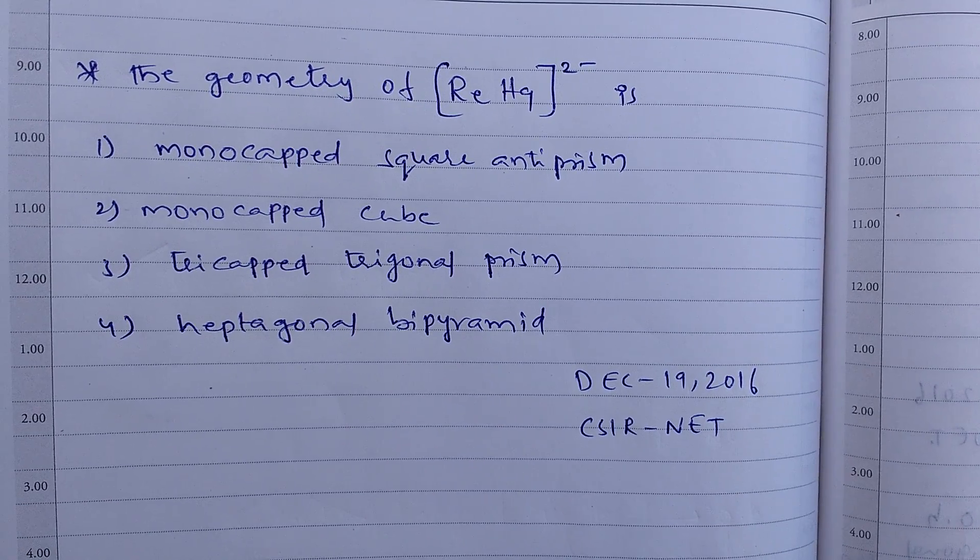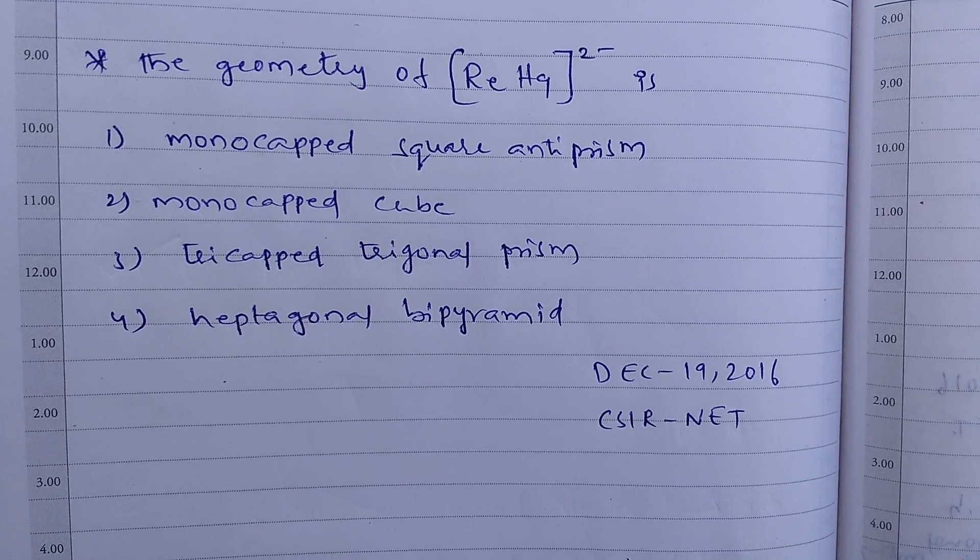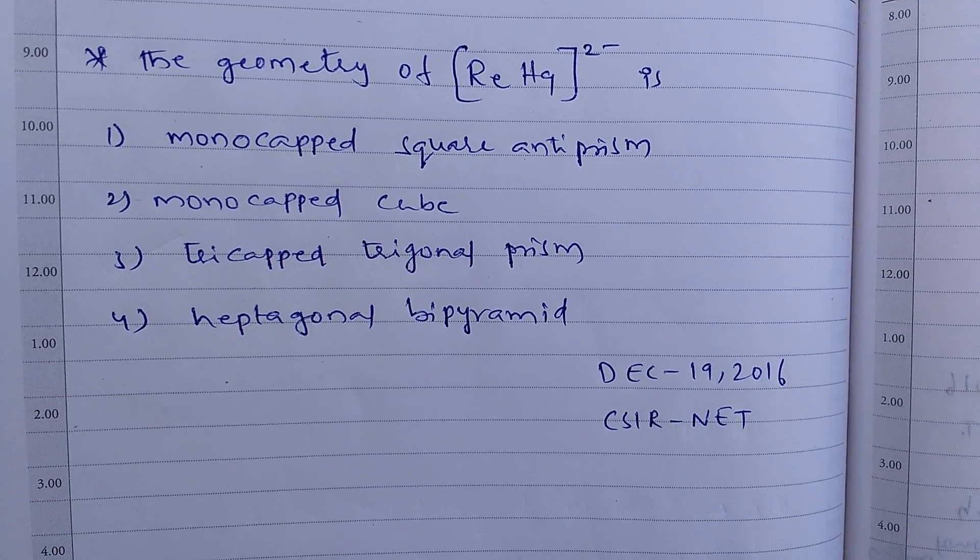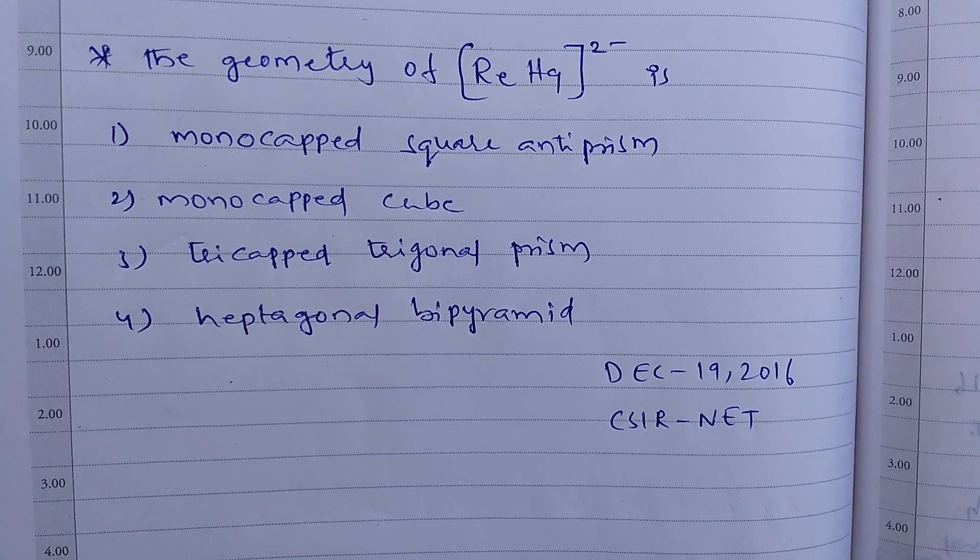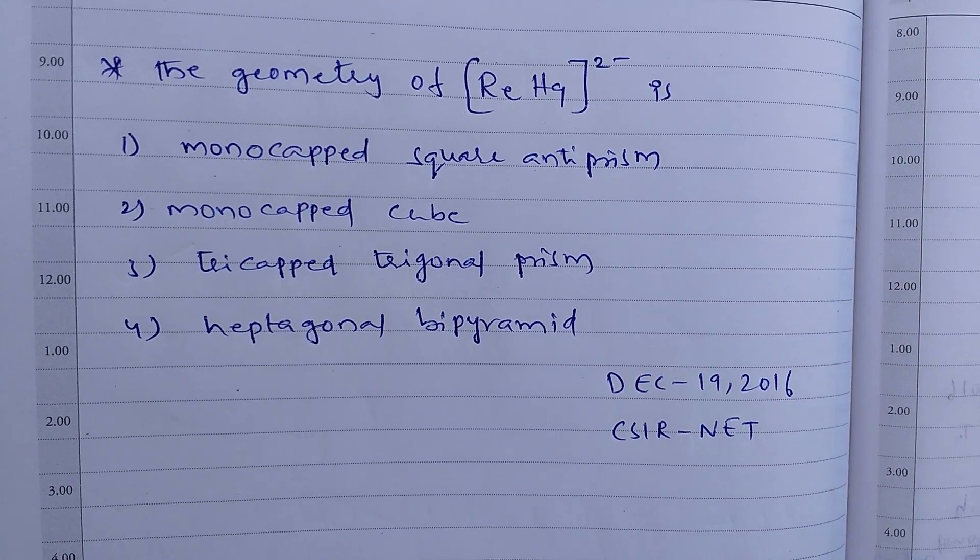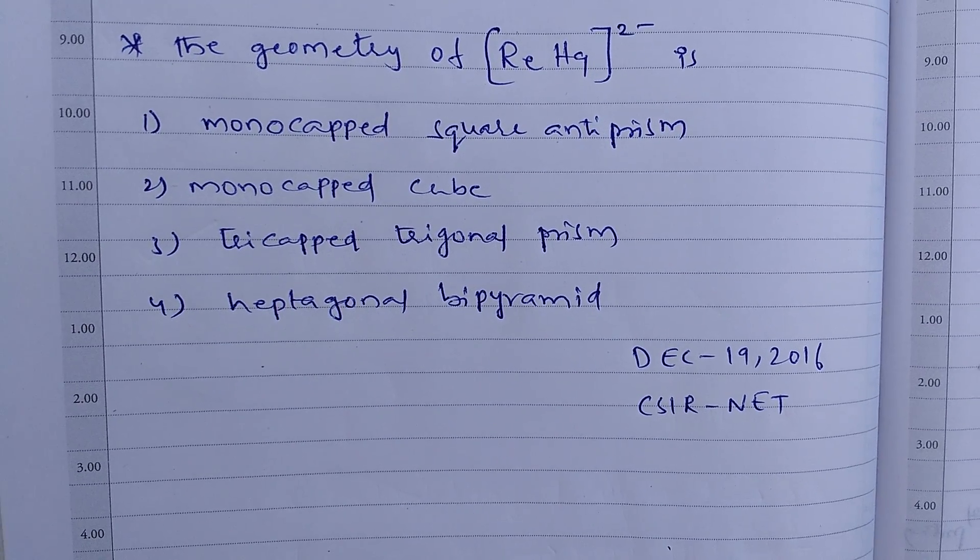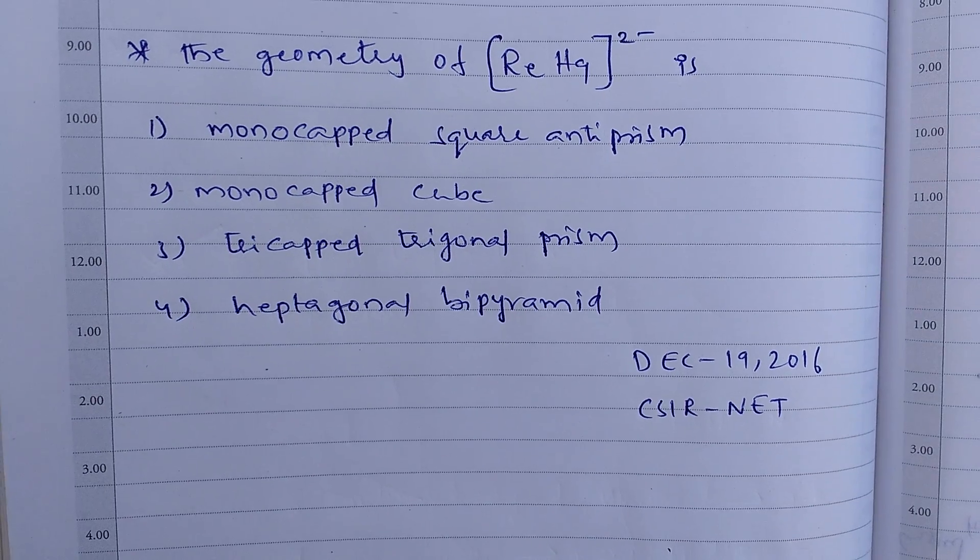Hi, this question appeared in December 2016 CSIR NET. The geometry of rhenium complex Re H9 2- is: 1st option monocapped square antiprism, 2nd option monocapped cube, 3rd option tricapped trigonal prism, 4th option heptagonal bipyramidal.